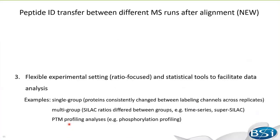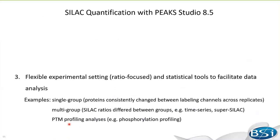I'm going to show three examples of how to use PICS Q to analyze complex SILAC data using published datasets. The first study identifies proteins showing consistent expression changes between labeling channels across replicates. The second study examines how SILAC ratios differ between multiple groups, such as a time-series profiling or super SILAC analysis. The third study focuses on PTM profiling analysis. Before these specific cases, I want to emphasize that in 8.5, the SILAC Q result is ratio focused.